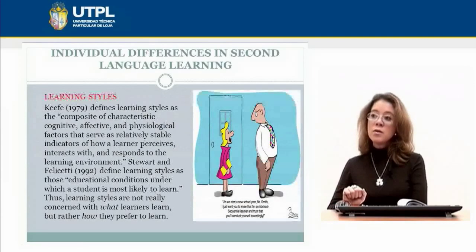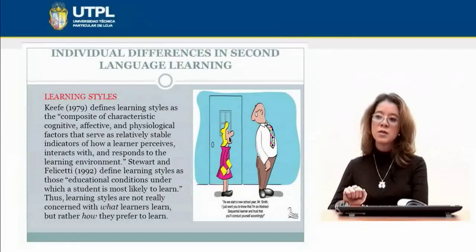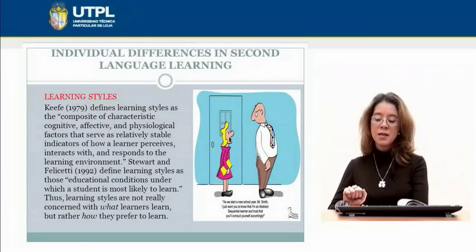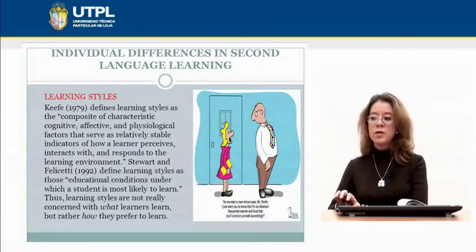We are also going to talk about learning styles. Keefe in 1979 defined learning styles as the composite of cognitive, affective, and physiological characteristics that serve as relatively stable indicators of how a learner perceives, interacts with, and responds to the learning environment. Seward and Felicity in 1992 defined learning styles as those educational conditions under which a student is most likely to learn. Thus, learning styles are not concerned with what learners learn, but rather how they prefer to learn.